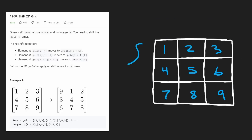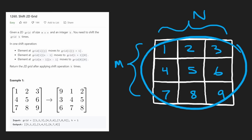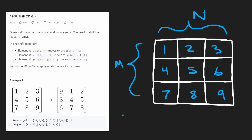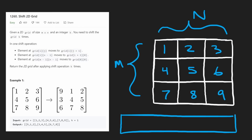First, let's understand that the number of rows is the M dimension and the number of columns is the N dimension. So if this were actually a one-dimensional array, the number of values in that array would be M times N.